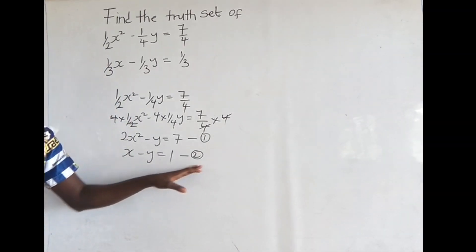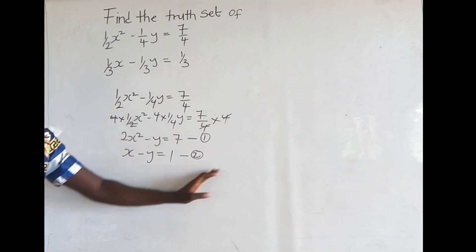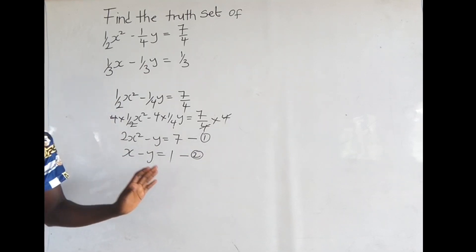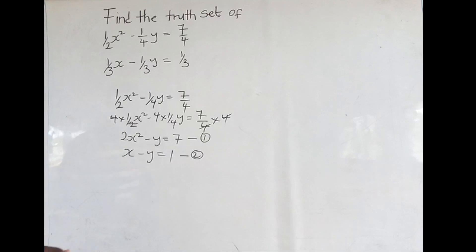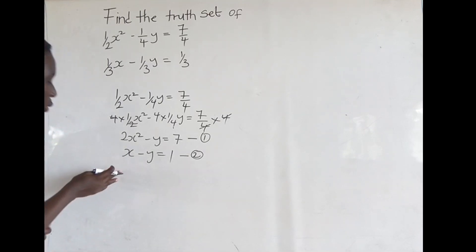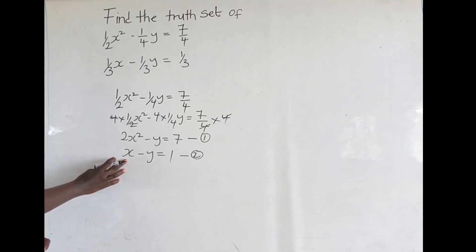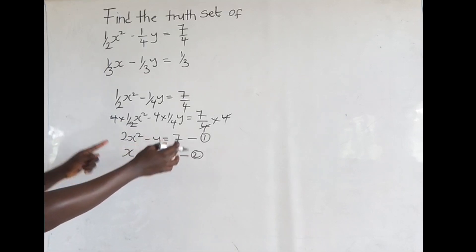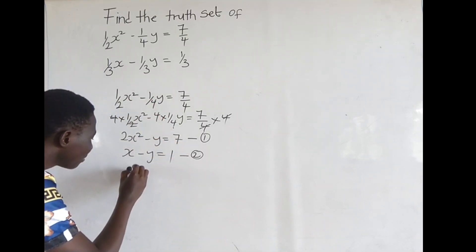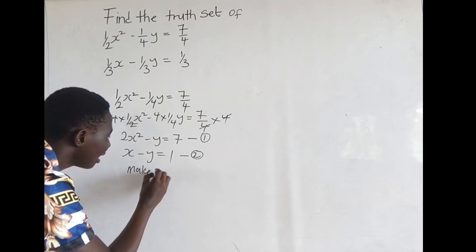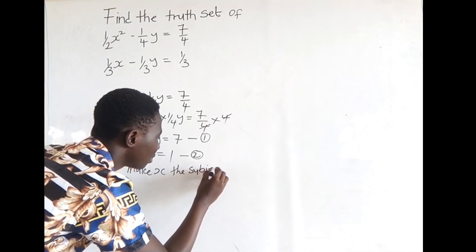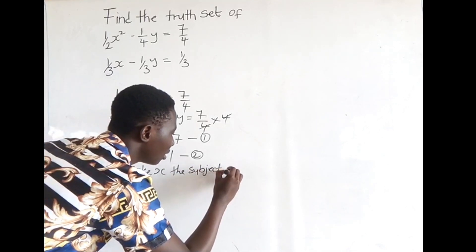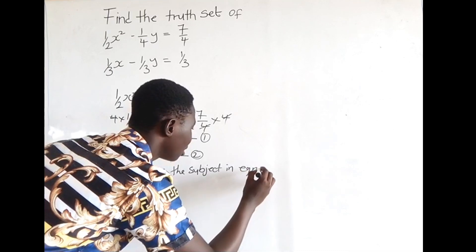From here, we have two ways of treating this type of question: that is the elimination and then the substitution method. With this one, we are going to use the substitution method — that is the easiest one. So what we do is make x the subject in equation 2 and then substitute it into equation 1.